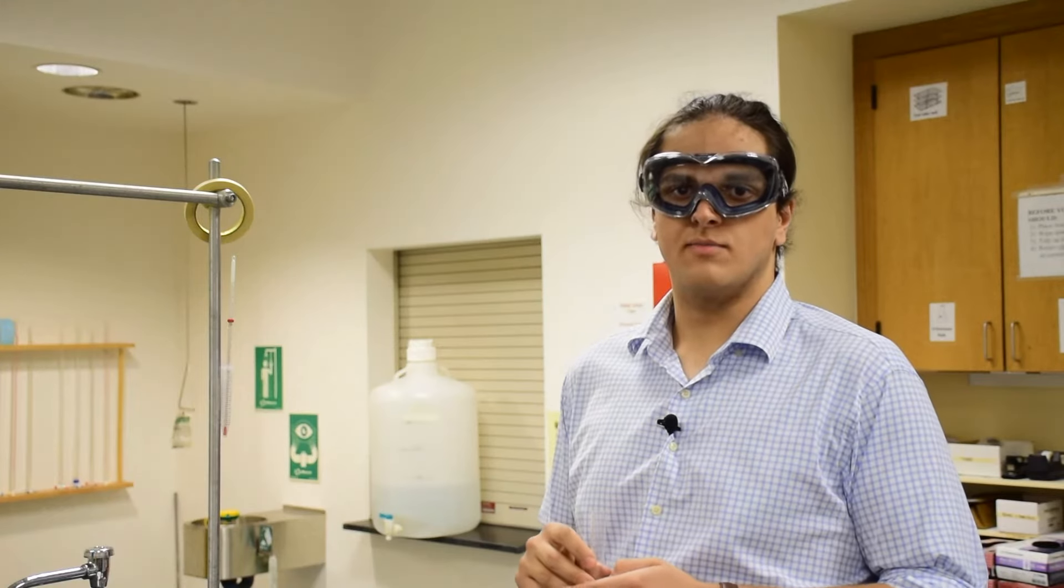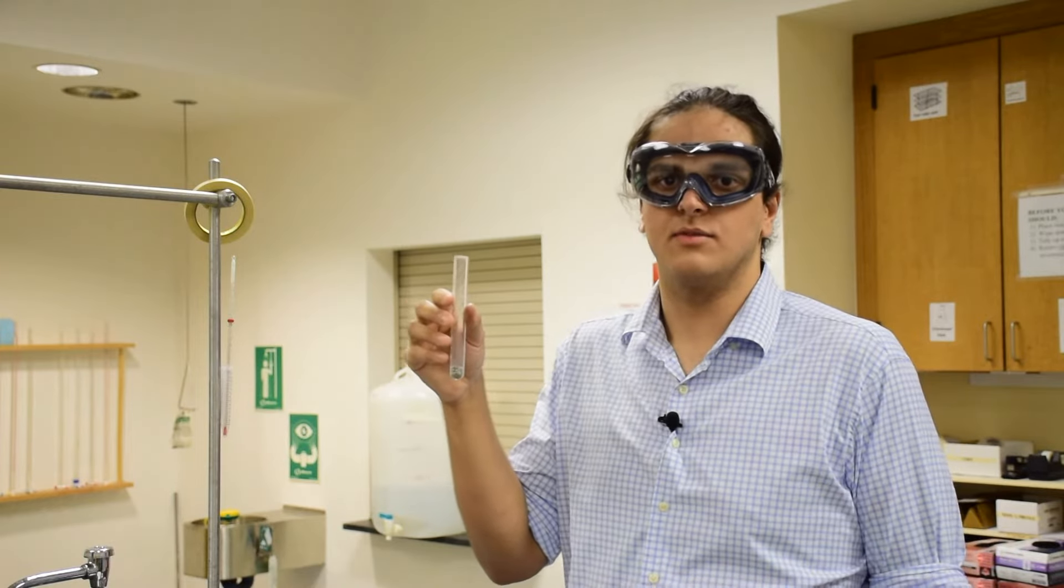In this lab, we'll be determining the specific heat of a metal by measuring temperature changes of water. You'll want to start off by preparing a test tube and putting in 10 to 15 grams of your metal sample.